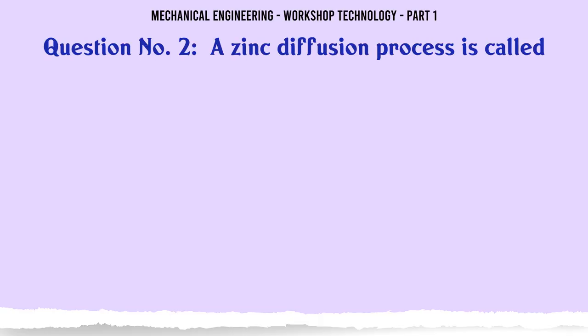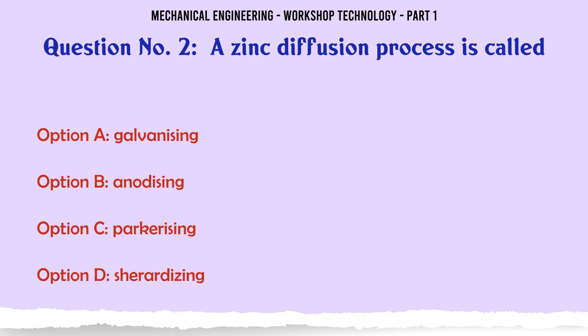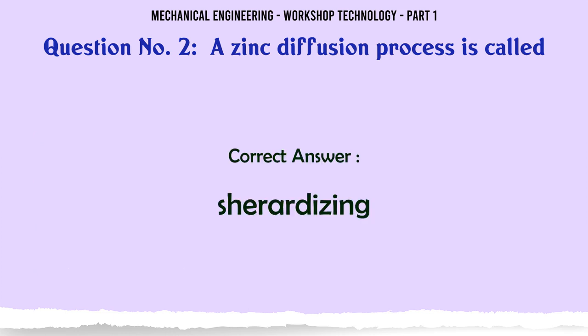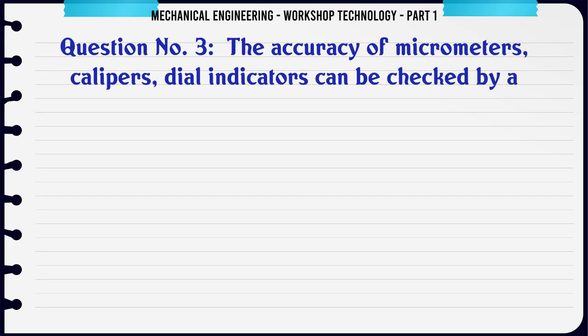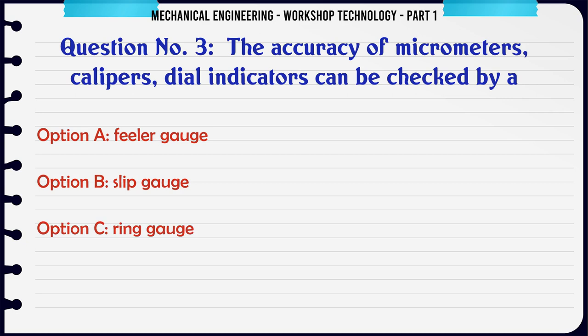A zinc diffusion process is called: A. Galvanizing. B. Anodizing. C. Perkyrizing. D. Sherrodizing. The correct answer is: Sherrodizing.